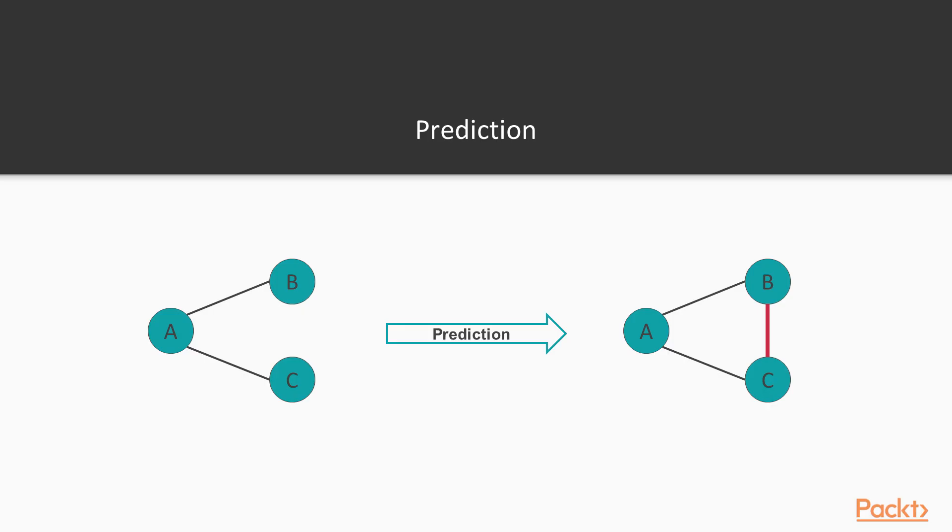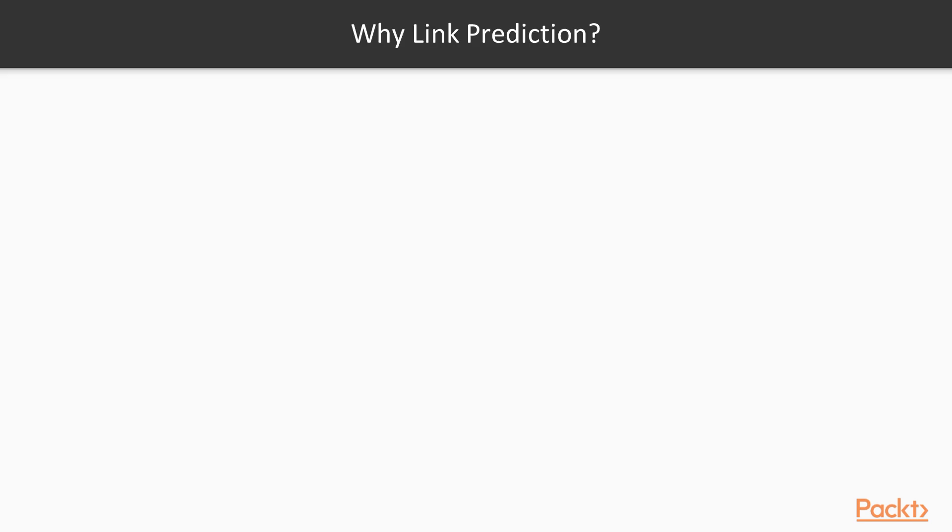The idea is quite simple. Given a graph with some known nodes and relationships, can we predict other links between nodes? It's important in mainly two cases.